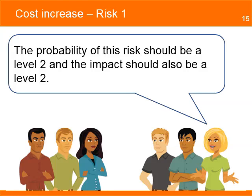The first risk is: cost of electric material might increase due to high market demand. The risk originally had a probability level of 3 and an impact level of 4, giving a risk index of 12. The actions identified to mitigate the risk were to purchase from different vendors. Due to her actions, she now believes the residual risk values should be level 2 for probability and level 2 for impact.